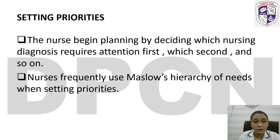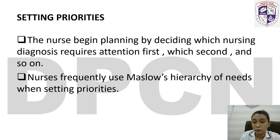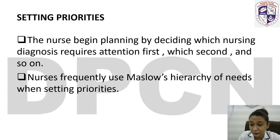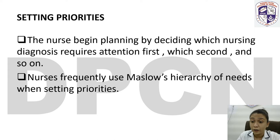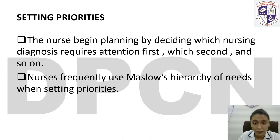Setting priorities: the nurse begins planning by deciding which nursing diagnosis requires attention first, which second, and so on. For example, if my patient has breathing difficulty and headache, I will treat breathing difficulty first. I will put an oxygen mask on the patient and provide oxygen, and then give analgesic medication or diversional therapy for the headache. Nurses frequently use Maslow's hierarchy of needs when setting priorities.